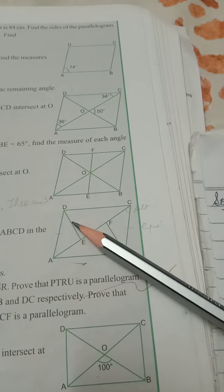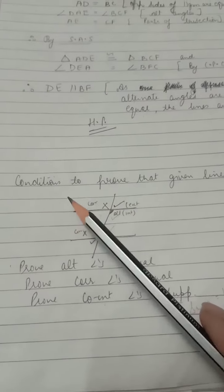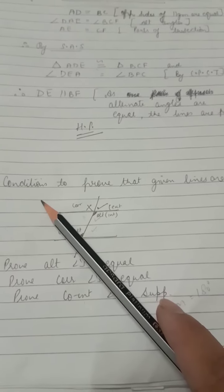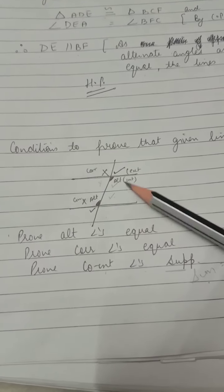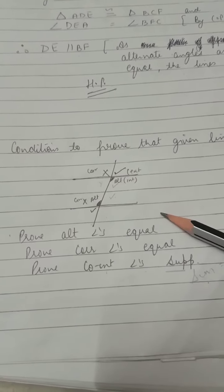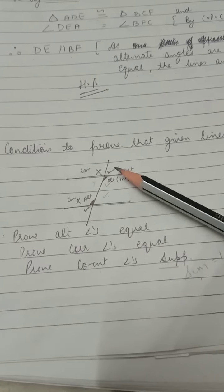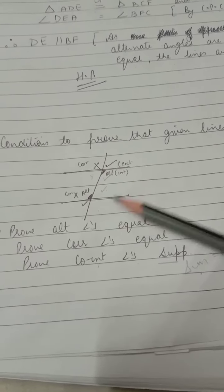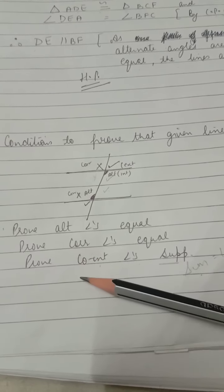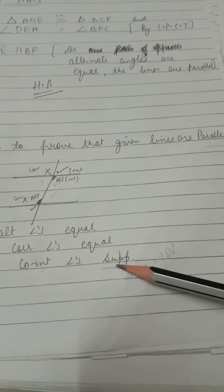We have to prove that DE is parallel to BF. Before proving parallelism, keep in mind the conditions required: lines are parallel if alternate angles are equal, if corresponding angles are equal, or if co-interior (co-integrated) angles are supplementary, meaning their sum is 180 degrees.